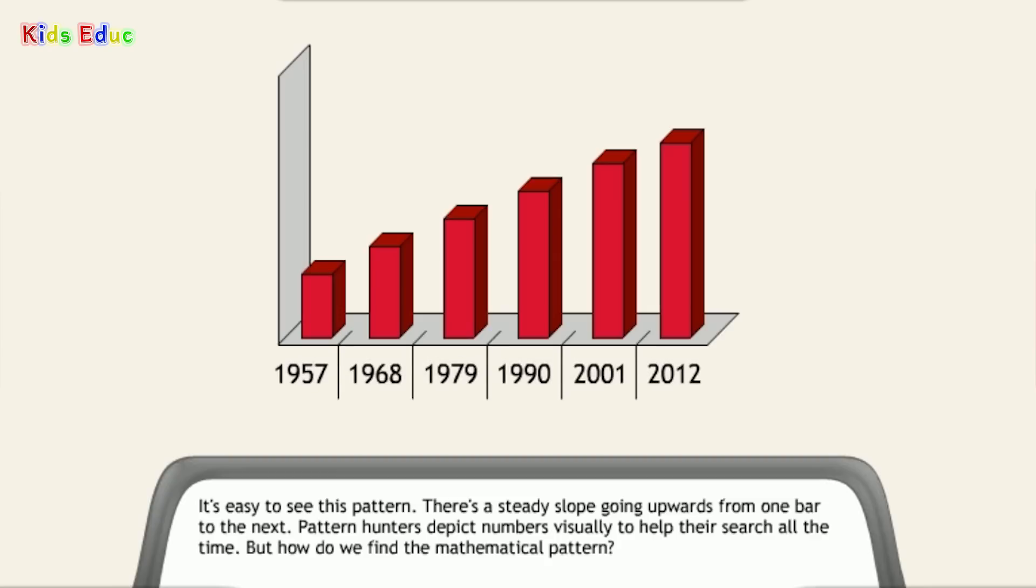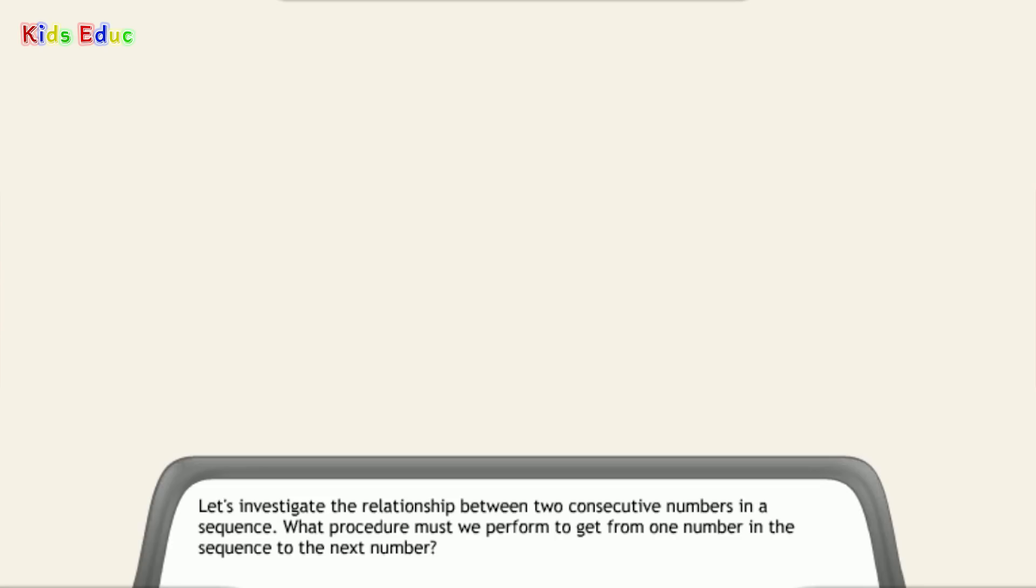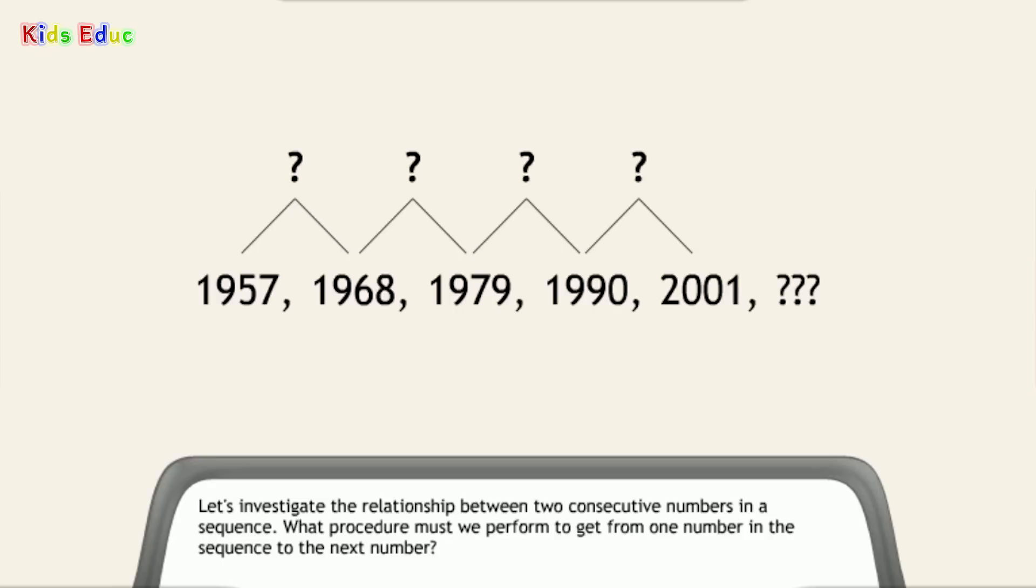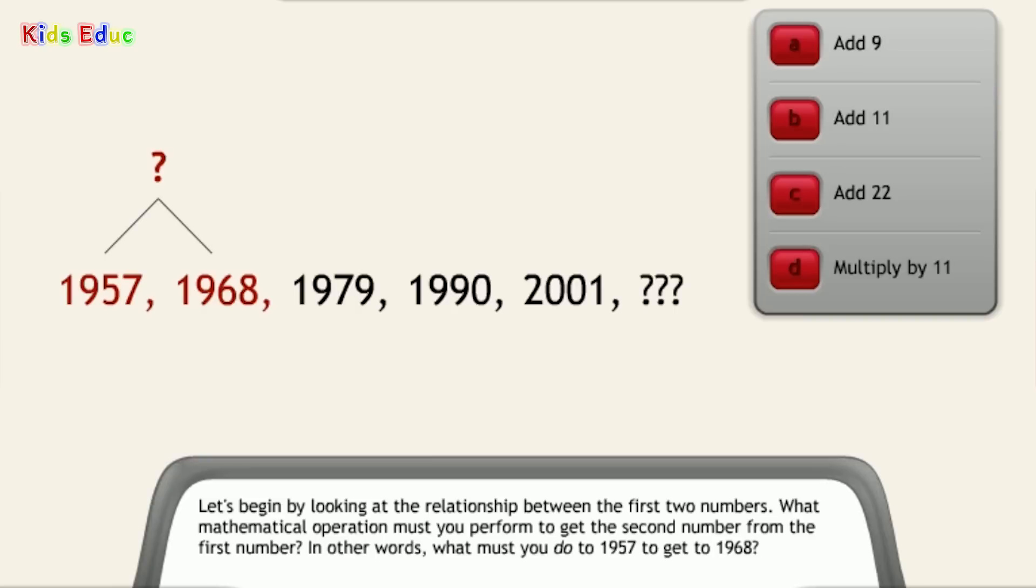Pattern hunters depict numbers visually to help their search all the time. But how do we find the mathematical pattern? Let's investigate the relationship between two consecutive numbers in a sequence. What procedure must we perform to get from one number in the sequence to the next number? Let's begin by looking at the relationship between the first two numbers. What mathematical operation must you perform to get the second number from the first number? In other words, what must you do to 1957 to get to 1968? Add 11.